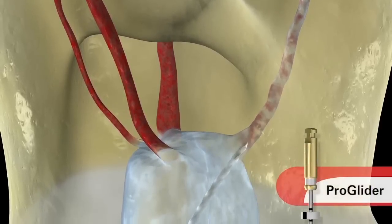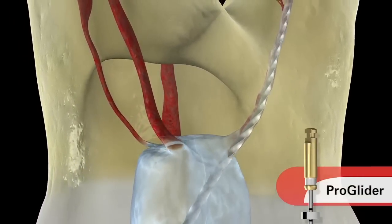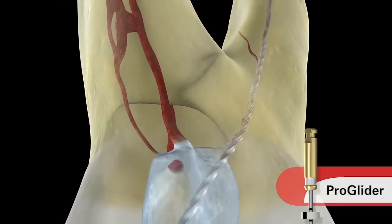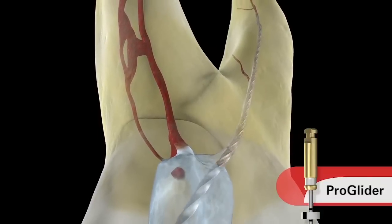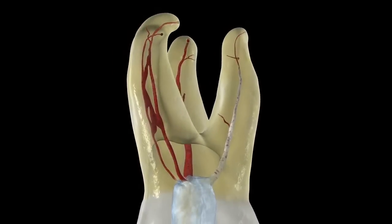Irrigate with sodium hypochlorite. Remove all viscous chelator — never spin a file at 300 RPMs in a canal loaded with viscous chelator. The ProGlider is allowed to float, follow, and run into the canal. In two, three, or four seconds you will reach the level where the TIN file was, and you've expanded the shape considerably. Notice, however, there's still an awkward triangle of dentin and the canal is still underprepared — but we have a glide path to accommodate passively and safely mechanical shaping files.